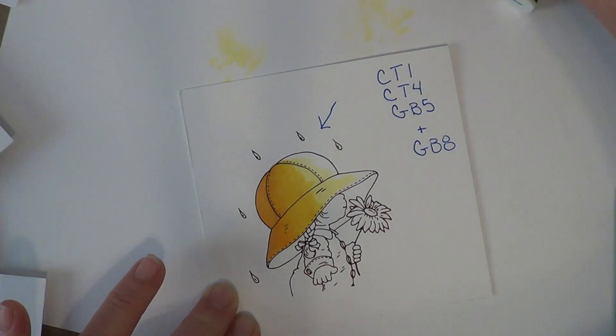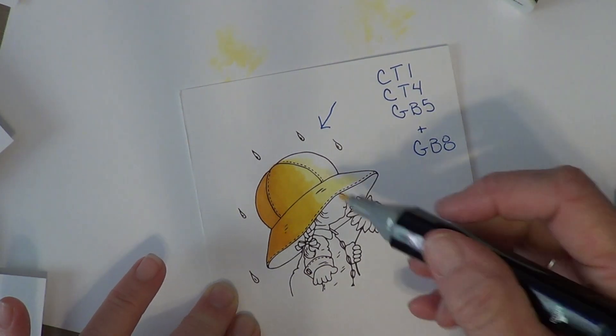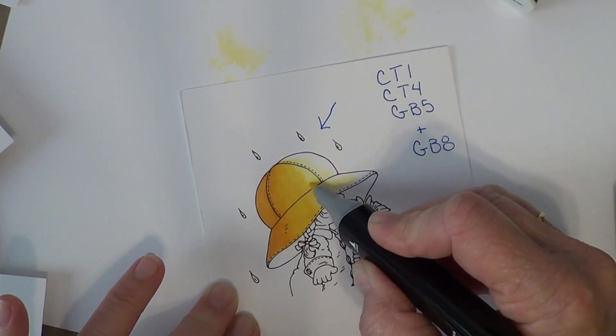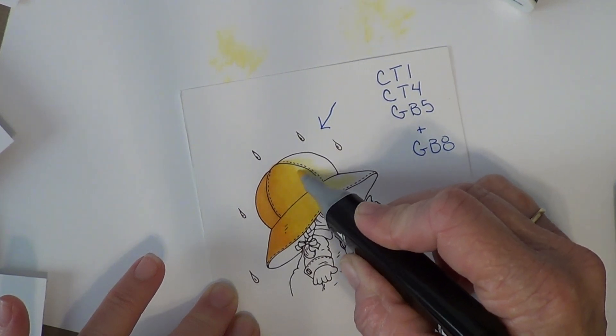Now I'm going to go on to my CT4, which is my lightest color. I'm going to overlap them gently to dilute the darker of the two colors and again pull it towards my highlight.